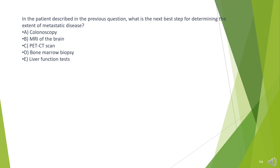In the patient described in the previous question, what is the next best step for determining the extent of metastatic disease? A. Colonoscopy. B. MRI of the brain. C. PET-CT scan. D. Bone marrow biopsy. E. Liver function tests.